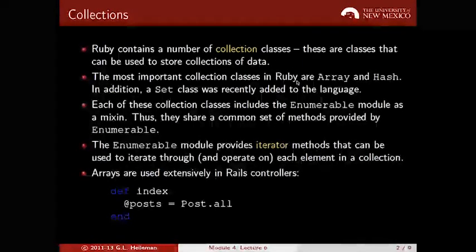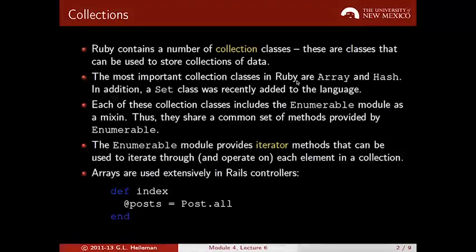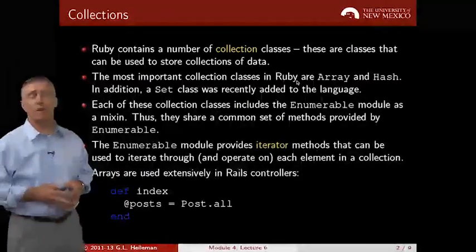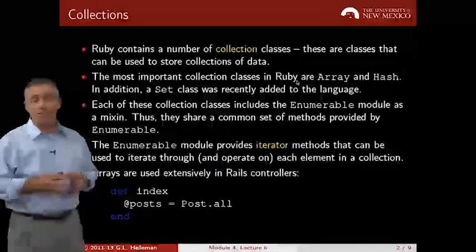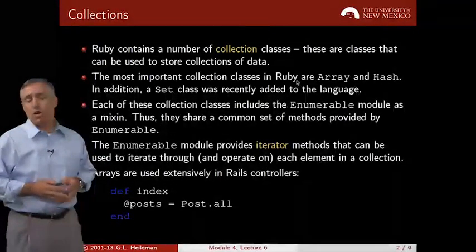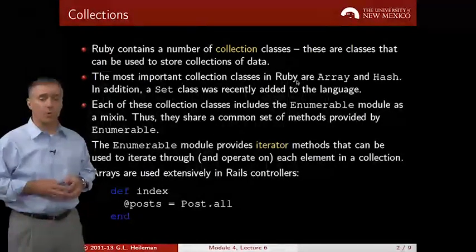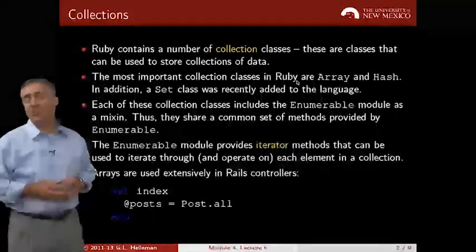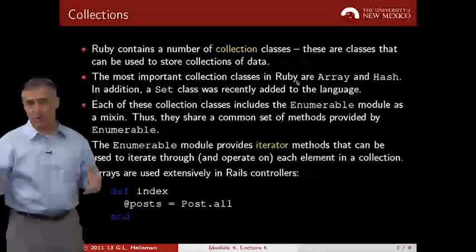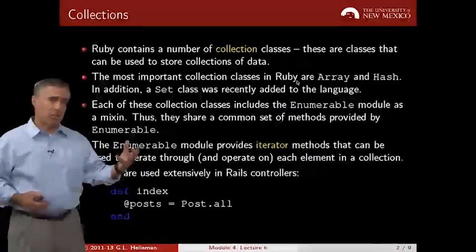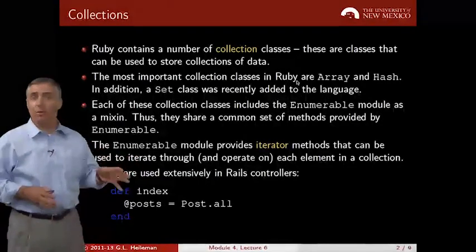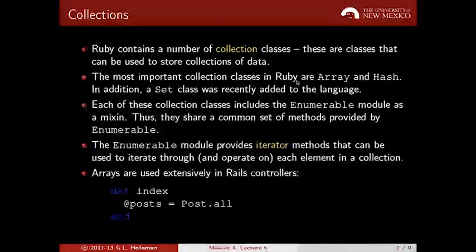Here's an example of an array that's used extensively in Rails controllers. If you open up your blog application and look at the index method under the post controller, you'll see the method def index, and then @posts. That at symbol means this is an instance variable. Post.all is an active record. Post is an active record object, .all returns all of the posts that are in your database and assigns them to that posts instance variable. That posts instance variable is an array, very important to recognize.